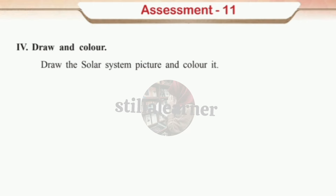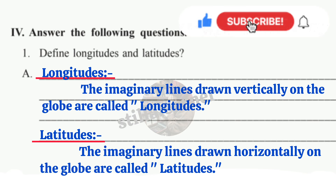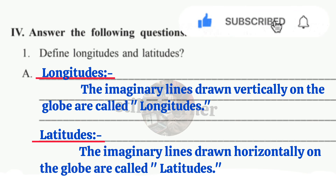This is the last part of the chapter. Question and answers: Define longitudes and latitudes. Longitudes: The imaginary lines drawn vertically on the globe are called longitudes. Latitudes: The imaginary lines drawn horizontally on the globe are called latitudes.